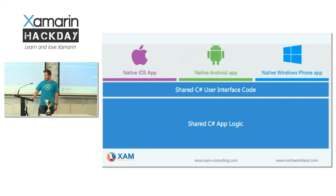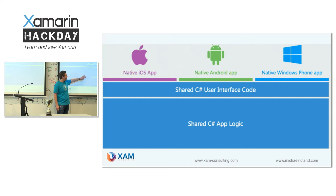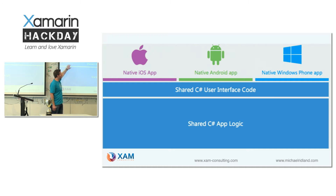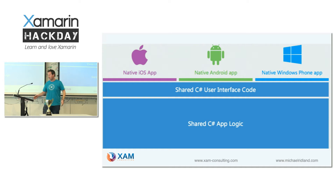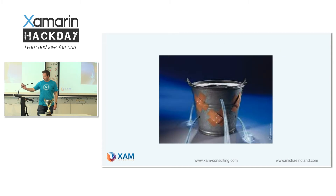Xamarin Forms. Xamarin traditional was having the shared C-sharp application logic with a native UI on each platform. Xamarin Forms now has a shared user interface code, with just a little bit of native. It really depends — sometimes you have to have a little bit more native on each platform, but there is an amount of logic that can be shared for the user interface. Because it is an abstraction, you're always going to get leaks. And it is only a year old, so over time it's going to improve and improve.